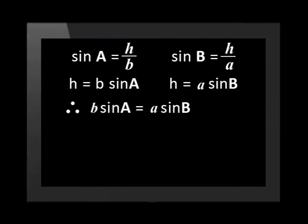We know that the value of H will be the same in both of the statements because it is the same line. Therefore, we can equate the two statements. So we can write b sine A is equal to a sine B.